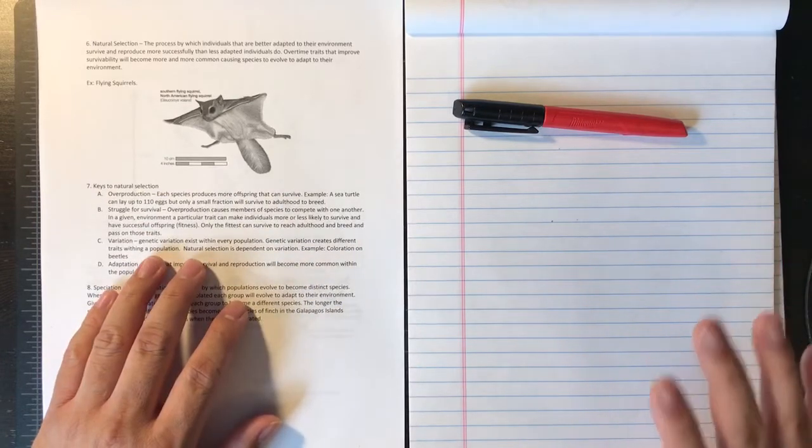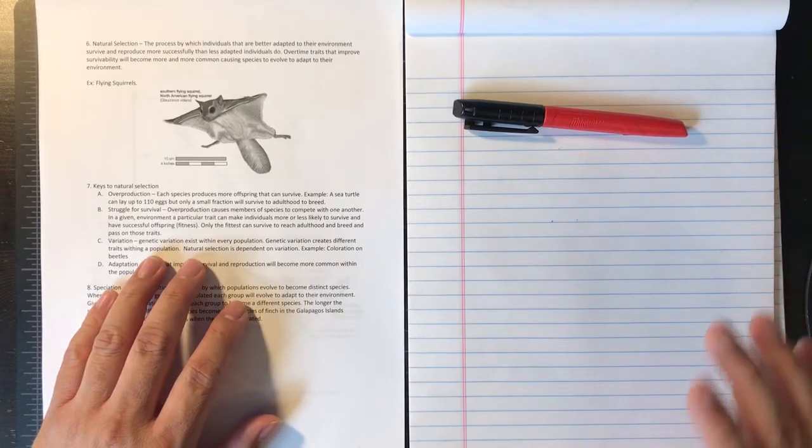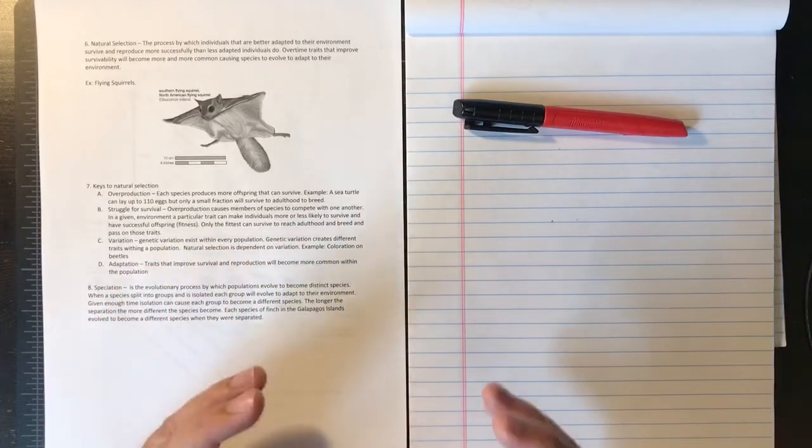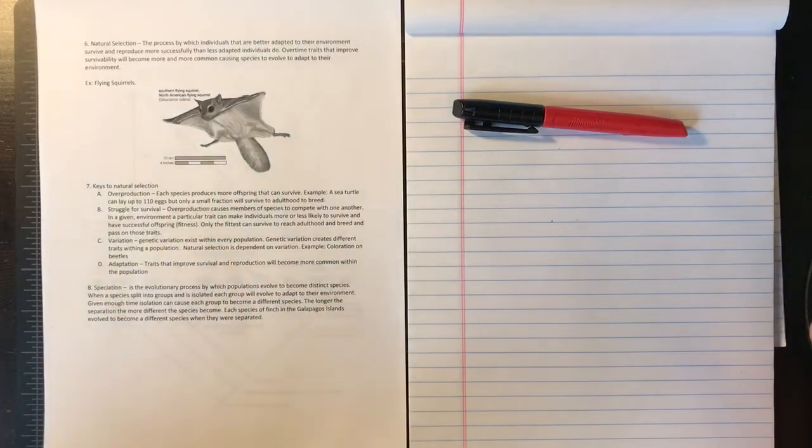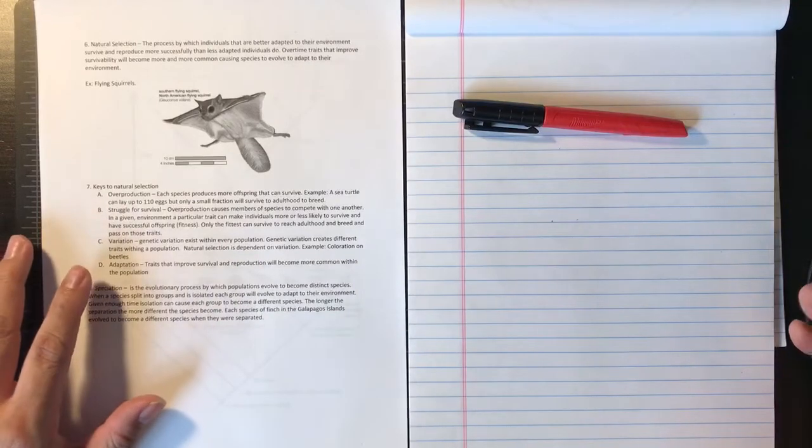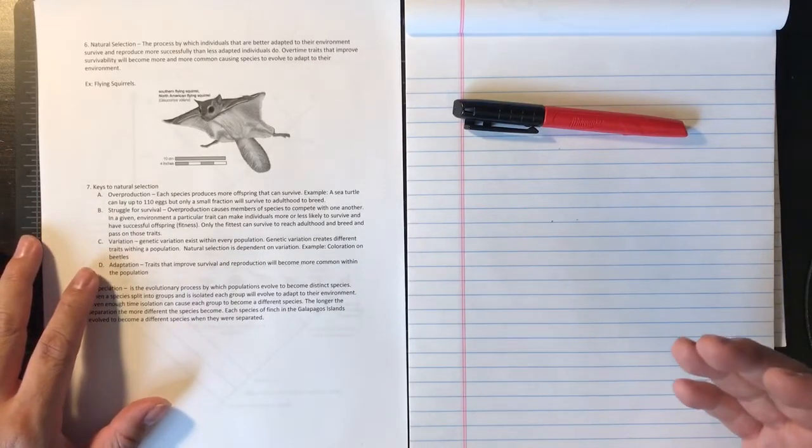B: struggle for survival. Overproduction actually causes members of each species to compete with one another. They'll make so much offspring that only the ones that have a particular trait that enables them to survive better will survive.